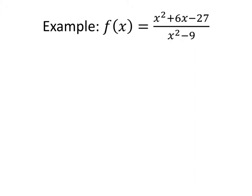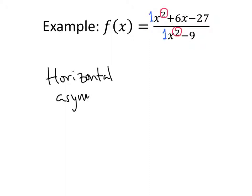Let's go back to our function. Does it have a horizontal asymptote? The degree of the top and the degree of the bottom are both 2, so the degrees are the same. The leading coefficient of the top is 1 and the leading coefficient of the bottom is also 1. So the horizontal asymptote is at y equals 1 divided by 1, which is just y equals 1.